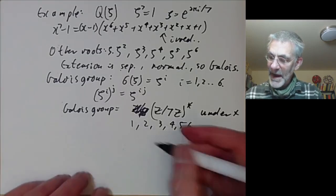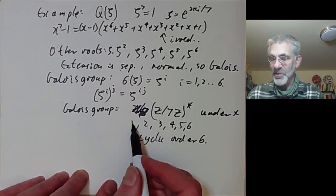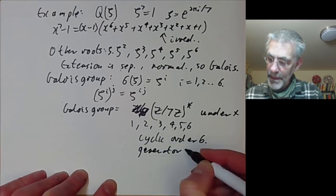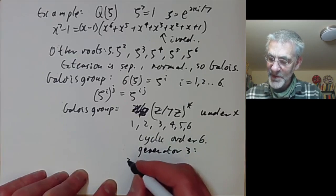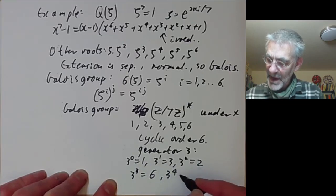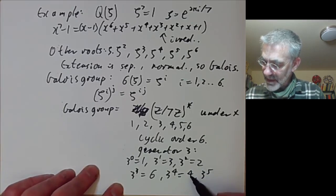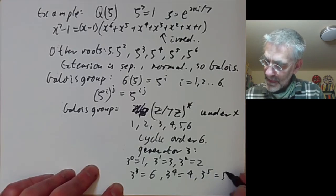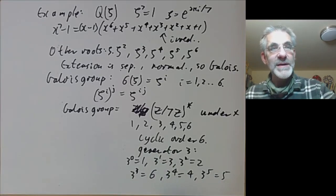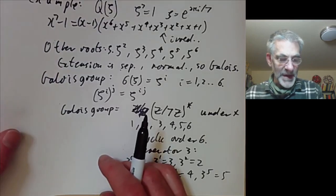A generator of this cyclic group of order 6 is 3, since the powers of 3 mod 7 cycle through: 3⁰=1, 3¹=3, 3²=2, 3³=6, 3⁴=4, 3⁵=5 — giving all six elements. A cyclic group of order 6 has exactly four subgroups.